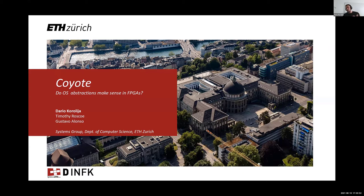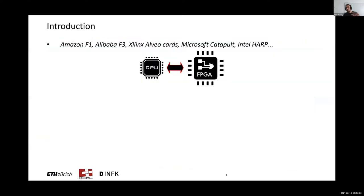This talk is largely based on a talk we gave last year at OSDI, and I will mention the current status of the project and some future directions. Hybrid computing systems consisting of a general purpose CPU coupled with an FPGA for acceleration are gaining a lot in popularity. You have big tech companies like Amazon and Alibaba offering cloud instances with Xilinx chips.